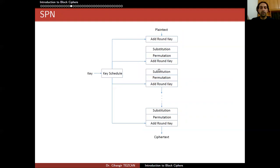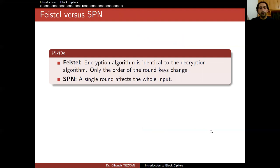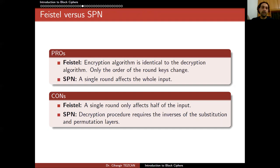This is not valid for Substitution Permutation Networks. In SPN, encryption goes in one direction, but a person decrypting has the ciphertext and must go from bottom to top, requiring the inverses of all operations. A pro for SPN is that a single round affects the whole input. Conversely, for Feistel, a single round only affects half of the input. For SPN, decryption requires the inverses of the substitution and permutation layers, which might mean larger code size in software or more gates in hardware.